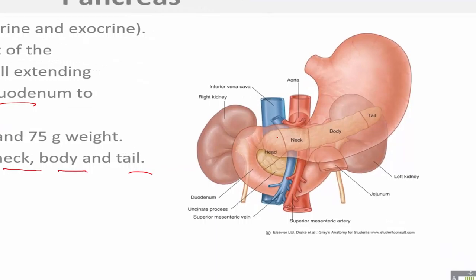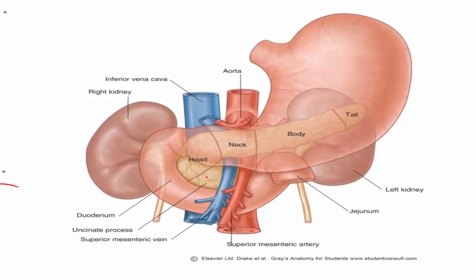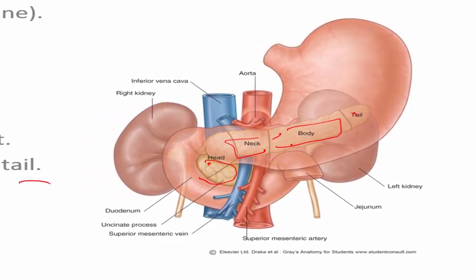This shows the different parts of the pancreas: the head of the pancreas, the body of the pancreas, the tail, and the neck connecting the body with the head.